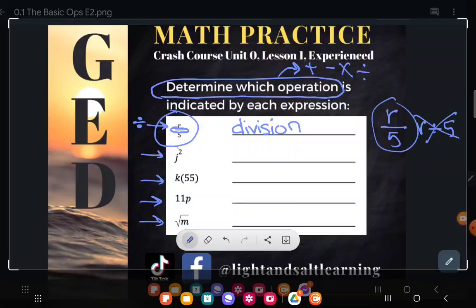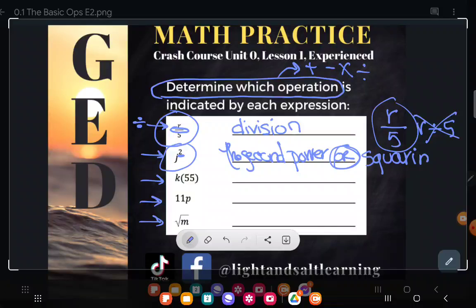Next one: J with this little floating 2. If you're an experienced level student, I'm going to guess you've seen some exponents before. This particular exponent is the number 2. We're talking about the second power. That's one way you can call it, or some of you know there's another name for that—that's also known as squaring. Whichever one you call it, either one of those are right.